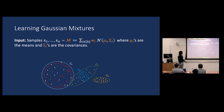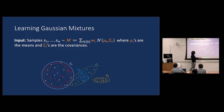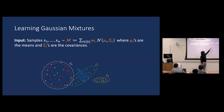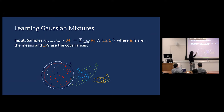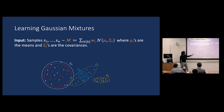Let me start by defining the problem of learning mixture of Gaussians. Our input is a set of n samples x1 to xn drawn from a mixture — which I'll denote by script M — of k Gaussians. To sample points from a mixture of k Gaussians, you pick mixture component i with probability w_i, and the i-th component is a Gaussian with mean mu_i and covariance sigma_i. These mu_i's and sigma_i's can be arbitrary. You get a set of samples from this joint mixture, and you don't know which sample came from which component.